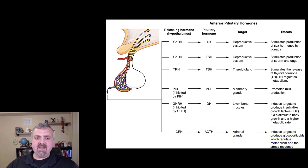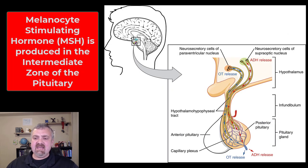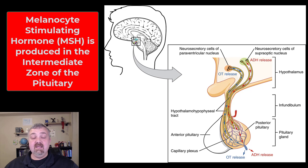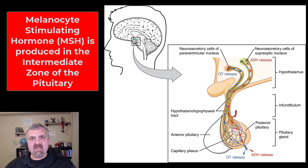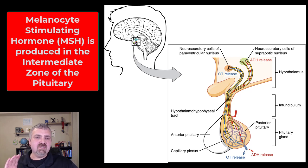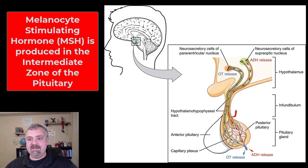The intermediate zone between the anterior and posterior lobes of the pituitary gland is where melanocyte-stimulating hormone comes from. It does stimulate melanocytes to make melanin, but it also appears to have other effects — it may impact the attachment of cells in the GI tract, affecting intestinal permeability. For now, just know that melanocyte-stimulating hormone stimulates melanocytes to produce melanin.